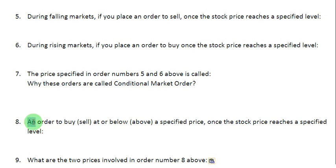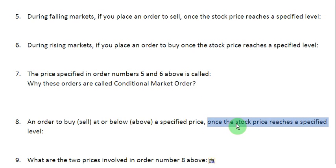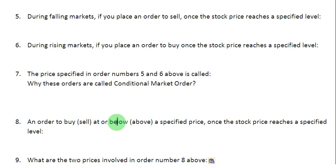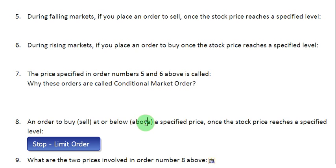Item number 8 talks about an order to buy at or below a specified price, or sell at or above a specified price, once the stock price reaches a specified level. This means we are actually specifying two prices: first, the stop price — the level we are waiting for the stock price to reach — and second, once the stop price is hit, we instruct our broker to buy at or below a particular level or sell at or above a particular level, which means we are specifying a limit price. Since this order specifies two prices — a stop price and a limit price — we call it a stop limit order.